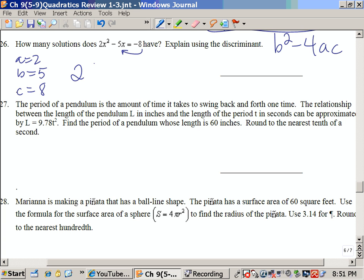So b squared would be 25 minus 4 times 2 times 8, which is 25, 4 times 2 is 8 times 8 is 64, and this is definitely going to be a negative number. If it's negative, that gives you no solutions.